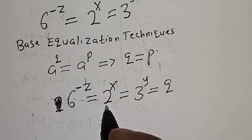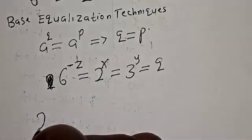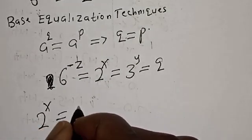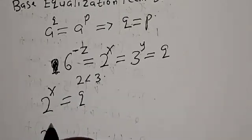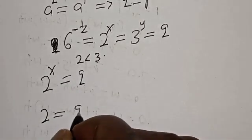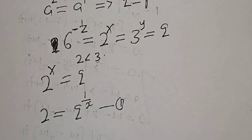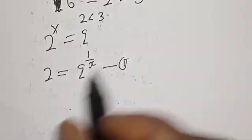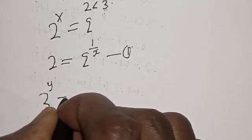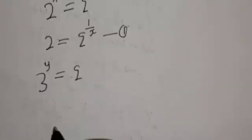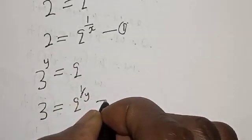Since 2 raised to power s is equal to Q, then 2 is equal to Q raised to power 1 over s. Let's call this equation 1. Also, 3 raised to power y is equal to Q, then 3 is equal to Q raised to power 1 over y. Let's call this equation 2.